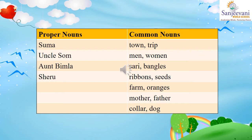We will now identify proper nouns and common nouns from the passage. In the first sentence, Suma is the name of a girl — it is a proper noun, so we write Suma in the proper noun column. Town is a name of a place, but it is a general name — there is no specific name for which town she went to — so it is a common noun. We write it in the common noun column.